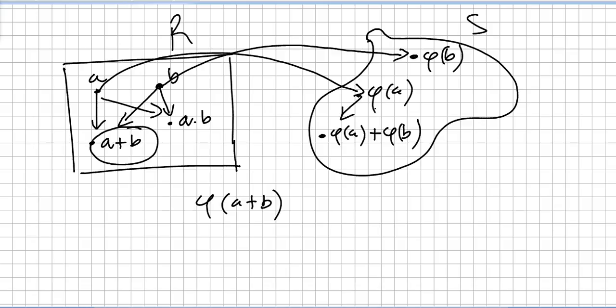So it will be this one and this one. Because this is a ring homomorphism. So, φ(A+B) will be equal to φ(A)+φ(B).